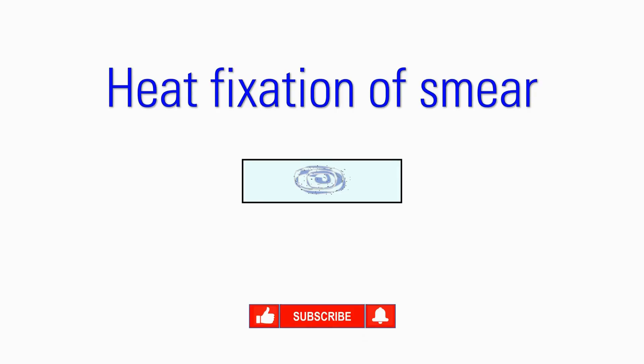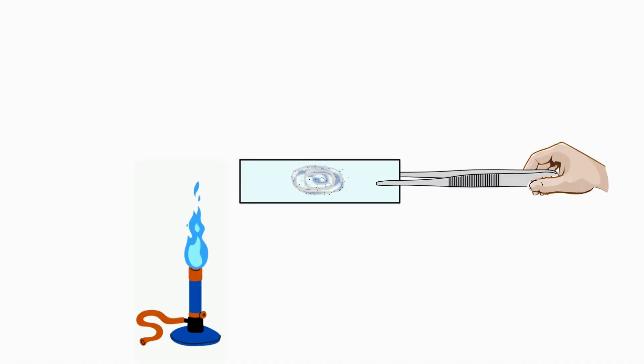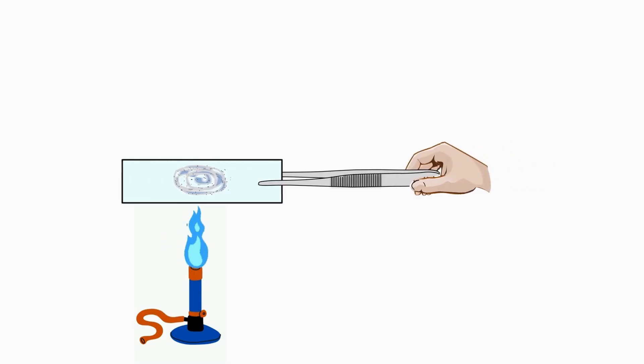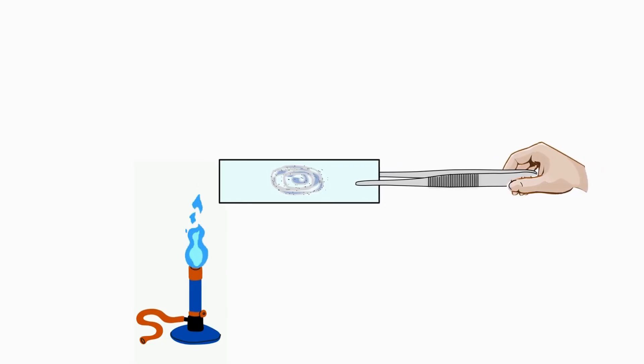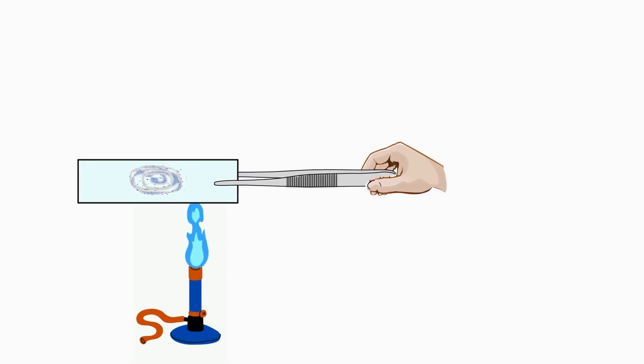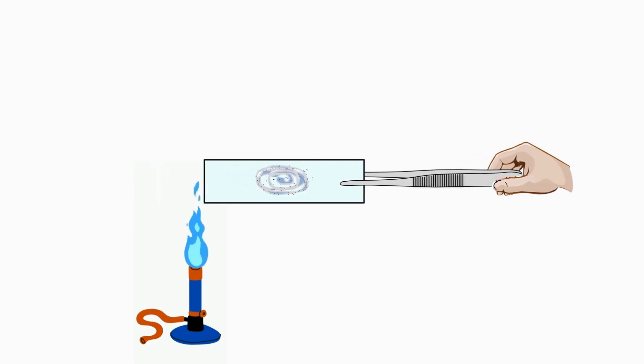After making the smear, we need to fix this bacterial smear on the slide. Let the smear air dry for a few minutes and then proceed to heat fixation. Hold the slide with forceps and gently pass the slide through the flame two to three times. Please be careful and do not overheat the slide. Now the smear is fixed on the slide and is ready for acid-fast staining.